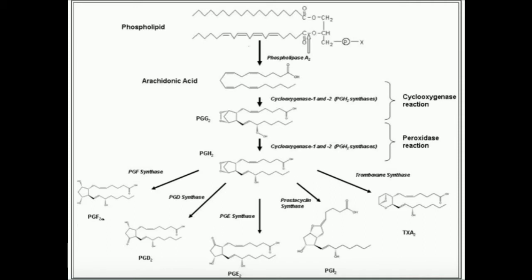Prostaglandins number one. Number two are thromboxanes. And number three, leukotrienes. Leukotrienes are not indicated in this figure. We'll cover leukotrienes in another eicosanoid video. Because leukotrienes are synthesized in a little bit of a different way.